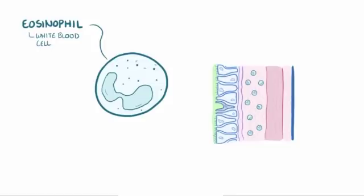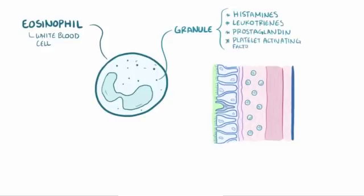Eosinophils are white blood cells that carry a cargo of granules full of soluble chemical mediators like histamines, leukotrienes, prostaglandin, and platelet-activating factor.